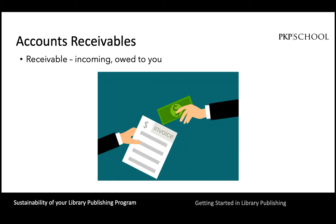Let's begin with accounts receivable. An accounts receivable is what you bill to a potential customer. This would likely be for services rendered by your publishing service program, for items such as hosting or editorial services. The aging report will determine any outstanding balances due to your company and can be used to determine which clients you might need to follow up with regarding past due invoices.